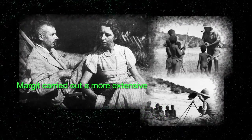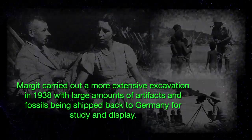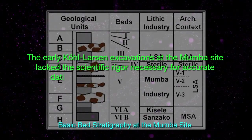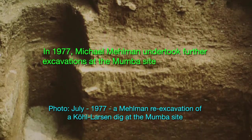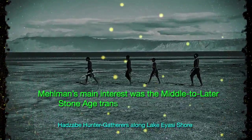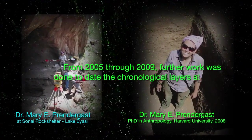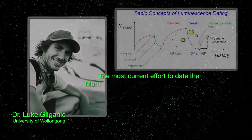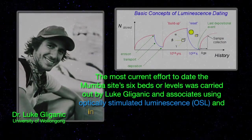Margit carried out a more extensive excavation in 1938, with large amounts of artifacts and fossils being shipped back to Germany for study and display. The early Kohl-Larsen excavations at the Mumba site lacked the scientific rigor necessary for accurate dating of the archaeological sequences. In 1977, Michael Mehlman undertook further excavations at the Mumba site, attempting to clarify the dating of the stratigraphy. Mehlman's main interest was the Middle to Later Stone Age transition in eastern Africa. From 2005 through 2009, further work was done to date the chronological layers at Mumba with greater accuracy by Mary Prendergast and other researchers. The most current effort to date the Mumba site's six beds or levels was carried out by Luke Gliganic and associates using optically stimulated luminescence and infrared stimulated luminescence.